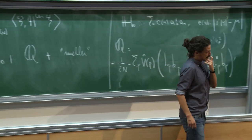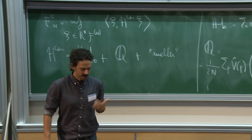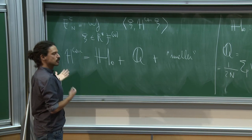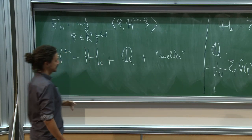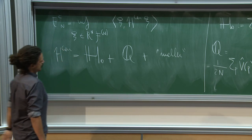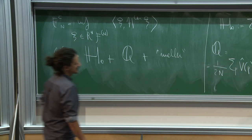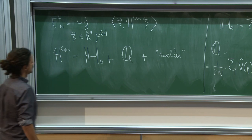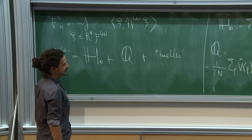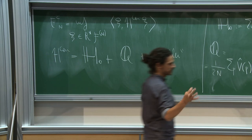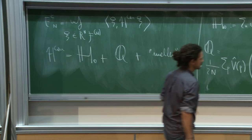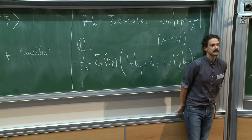Two natural extensions: first, treating the Coulomb potential — interesting but very difficult, even the upper bound is challenging. Second, extending to the thermodynamic limit even for bounded potentials — the current estimates don't scale linearly with volume, so one would need local estimates and patching. Both are currently open.